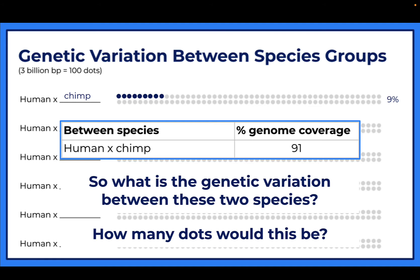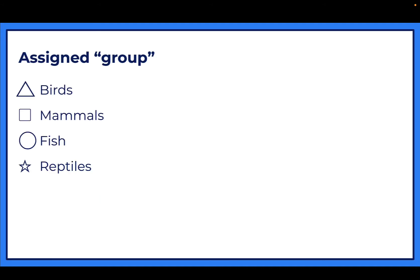In class, each person at a table is assigned a species group: birds, mammals, fish, and reptiles. The bird person finds four different birds and records the variation, the mammal person finds four different mammals, and so on. Since you're doing this at home, find one bird, one mammal, one fish, and one reptile.